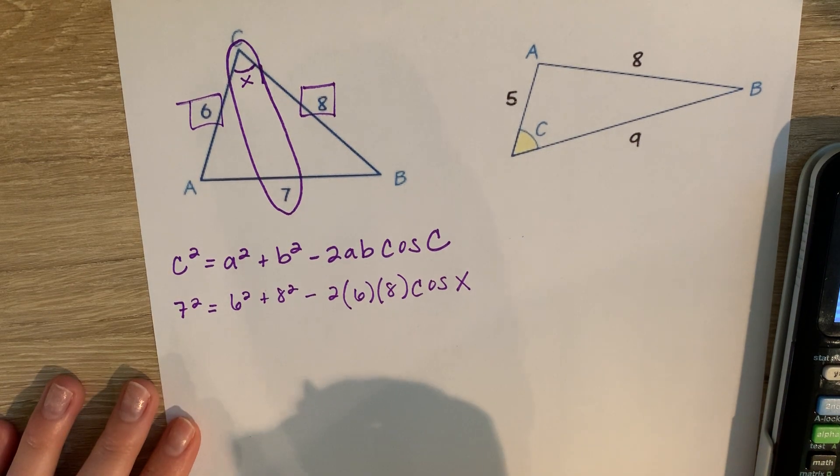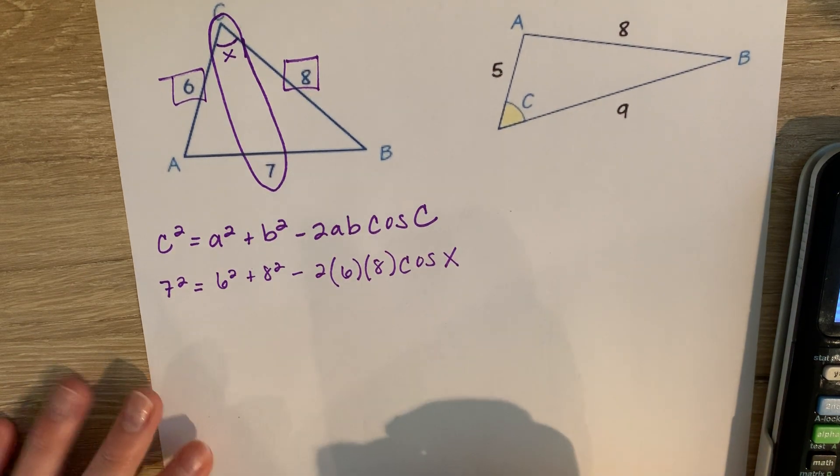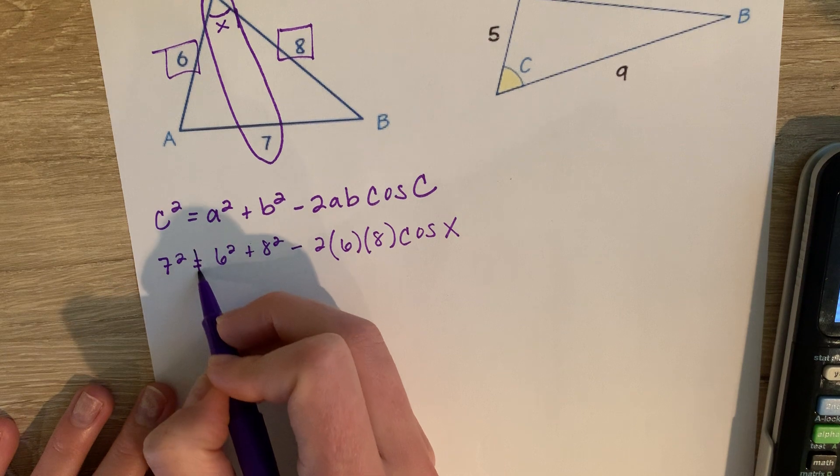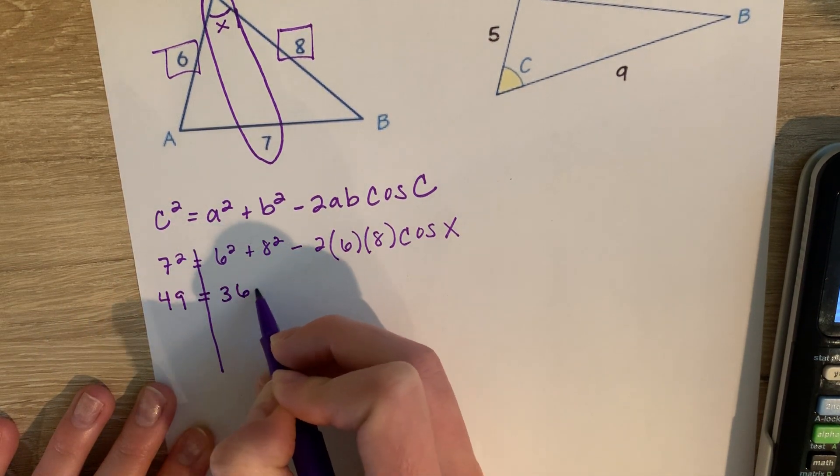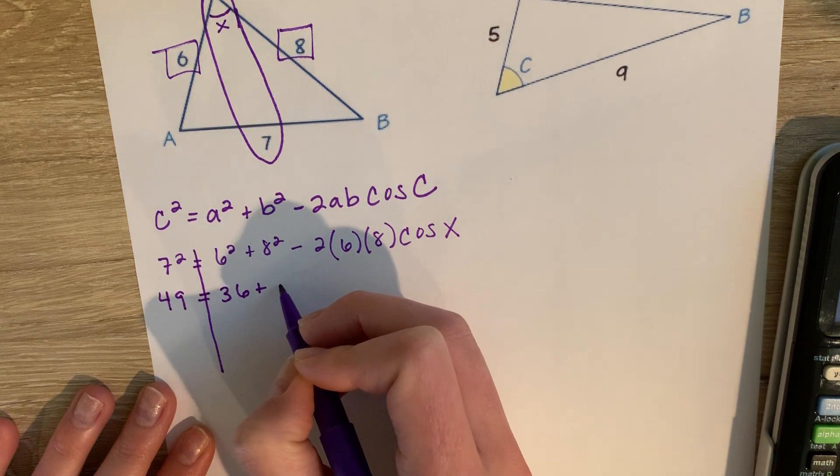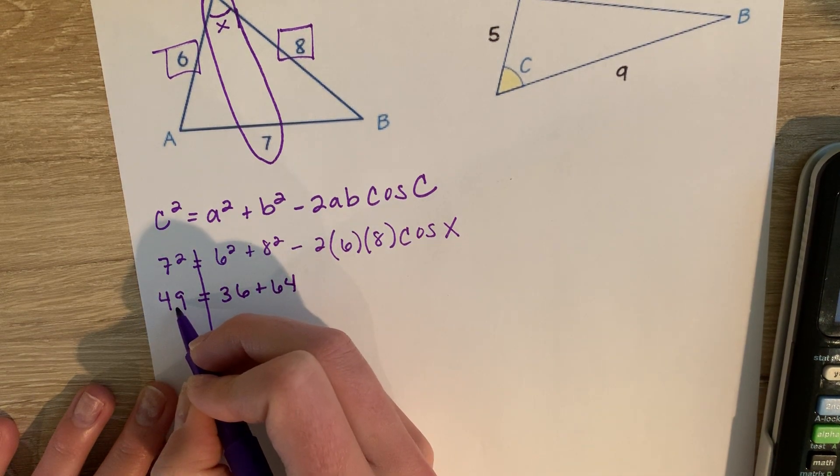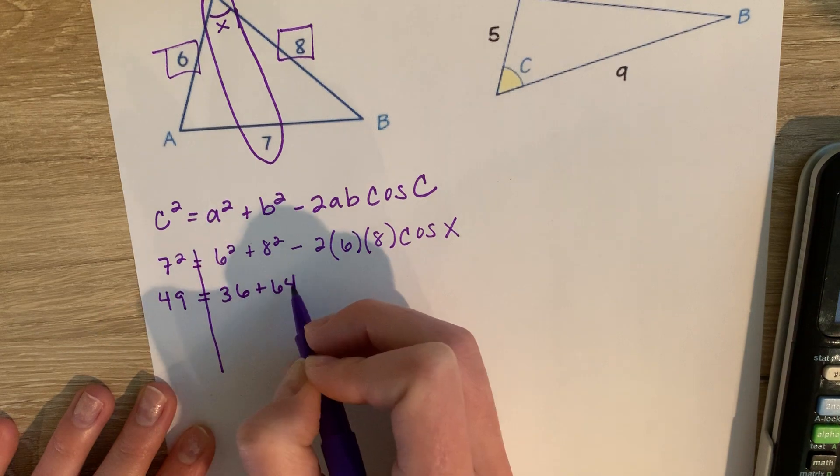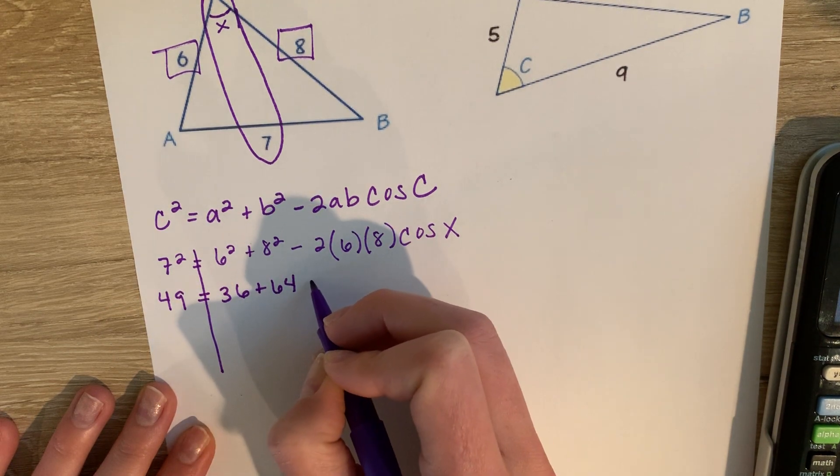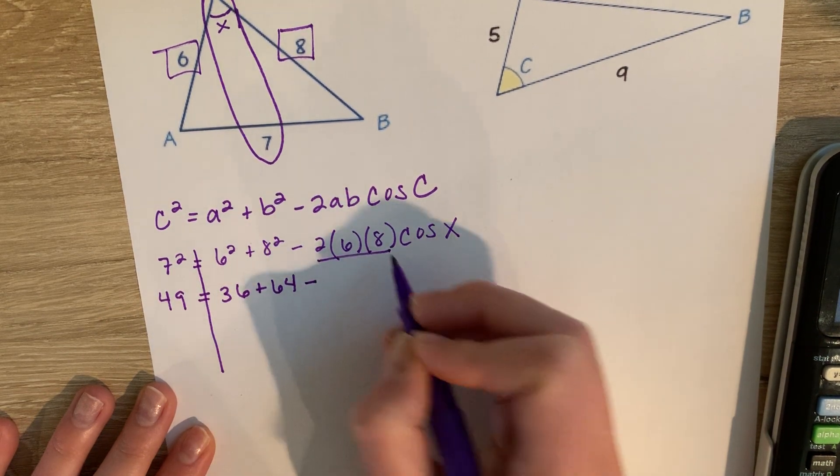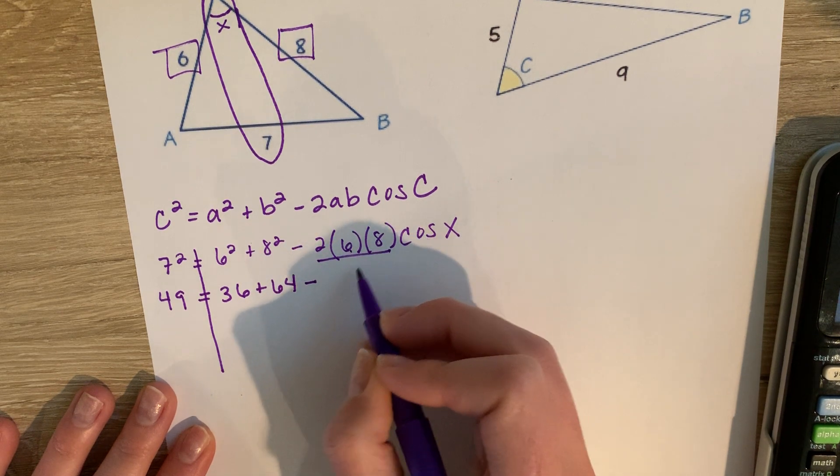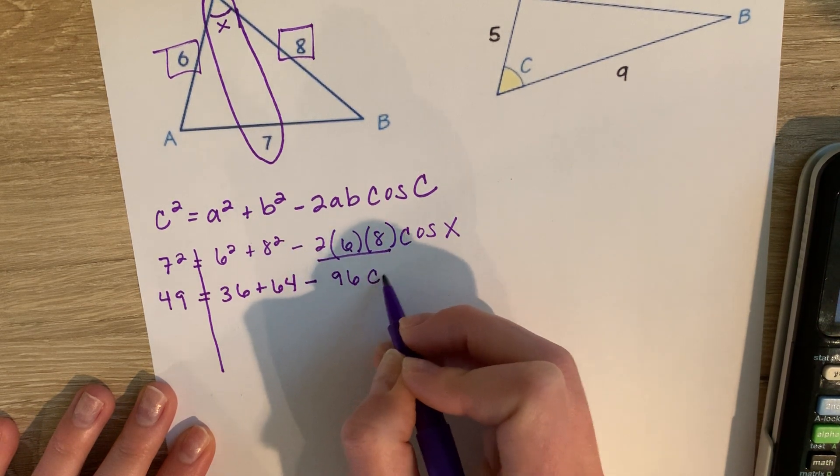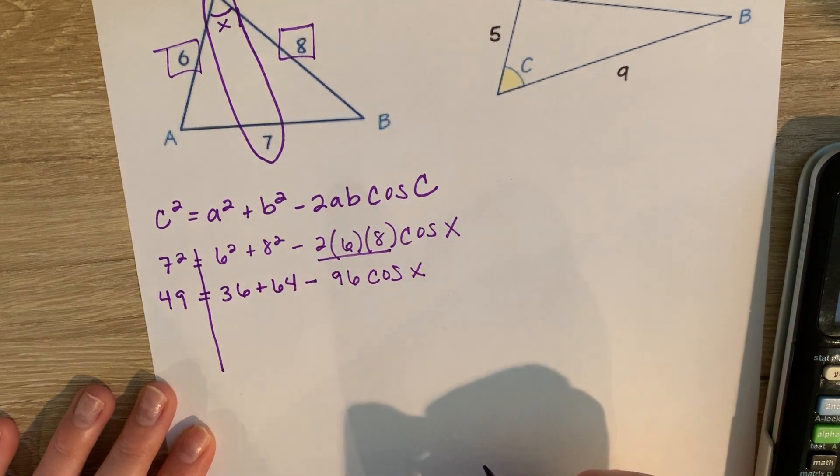Now this is where I'm talking about the algebra. So when you're trying to find an angle, things get a little tricky. You can solve some of these things in your head. You know that 7 squared is 49, 6 squared is 36, 8 squared is 64. Multiply 2 times 6 to get 12, 12 times 8, we get 96, and we still have times cosine of x.